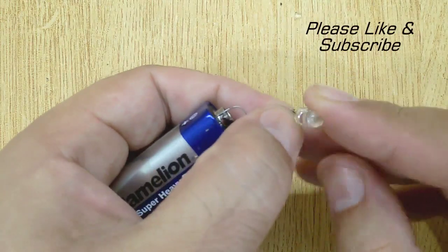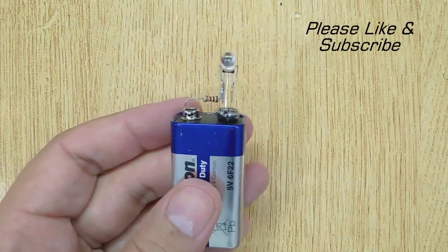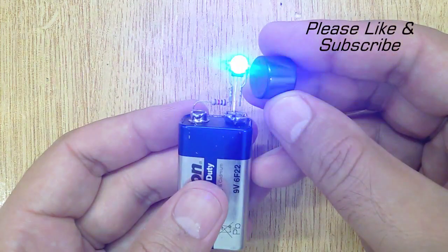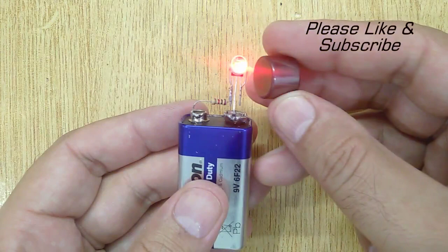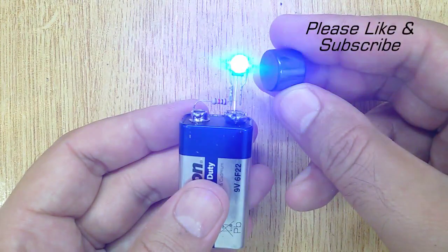And you are done. Now when we bring the magnet near the hall effect sensor, the RGB LED glows. And when we remove the magnet, the RGB LED becomes dark.